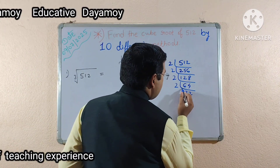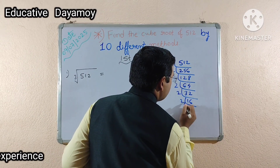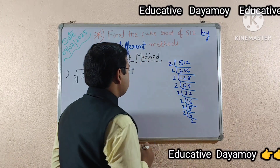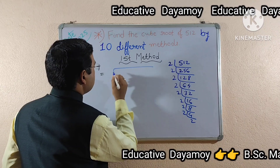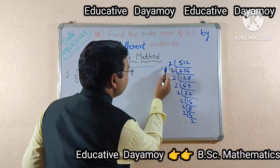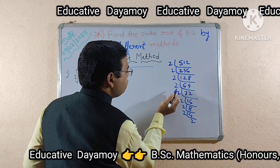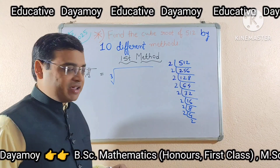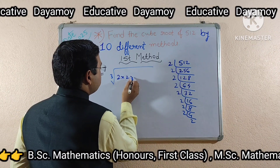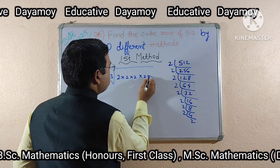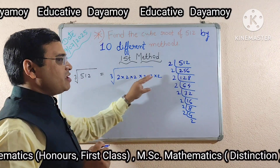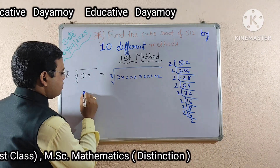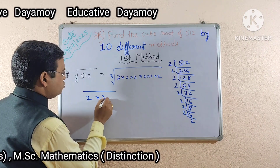Again I am saying: in prime factorization you have to take prime numbers to divide the numbers you are getting subsequently. So now: 2, 16, 32; 2, 8, 16; 2, 4, 8; 2, 2, 4. So now, what are you getting here? Cube root of 512. How many 2s are you getting? 1, 2, 3, 4, 5, 6, 7, 8, 9. You are getting nine 2s here. So I will write here 2 into 2 into 2 into 2 into 2 into 2, and as space is less I am writing the remaining 2s here: 2 into 2 into 2.